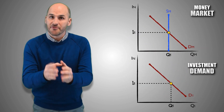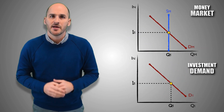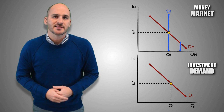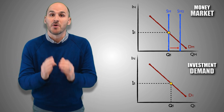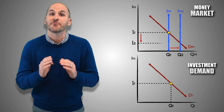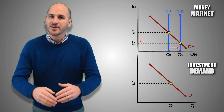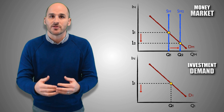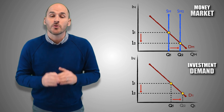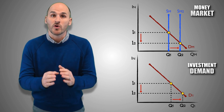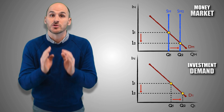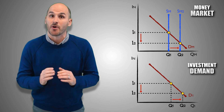So if the Fed wants to stimulate investment spending to help revitalize aggregate demand in order to stabilize the economy, it needs to use monetary policy that will cause the nominal interest rates to fall in the money market. This should act as a catalyst for greater investment spending in the aggregate economy. Firms that were either unwilling or unable to take out loans now have an incentive to take advantage of a lower interest rate to borrow from banks.